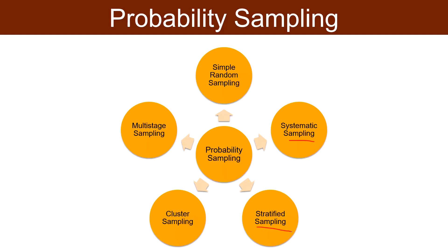Stratified sampling: the population is classified into non-overlapping groups, that is strata, and then the samples are selected from each stratum. Cluster sampling: the population is grouped into clusters and then the group or cluster is selected to represent the large population.